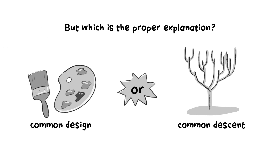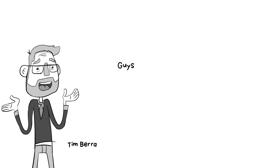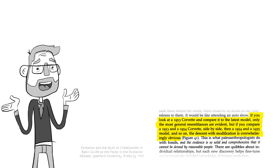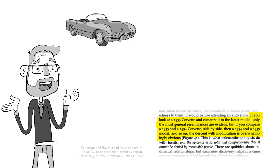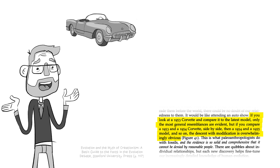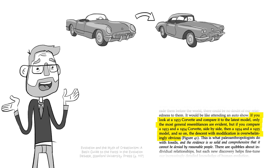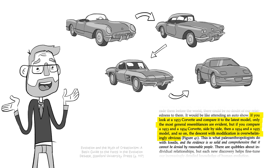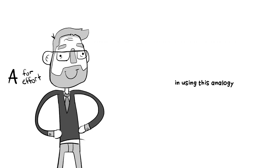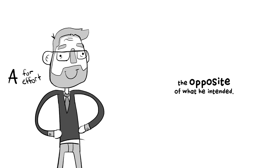But which is the proper explanation for these obvious similarities? Enter biologist Tim Berra. He had a really good illustration to put this question to bed: if you look at a 1953 Corvette and compare it to the latest model, only the most general resemblances are evident. But if you compare a '53 and '54 side by side, and so on, the descent with modification is overwhelmingly obvious. In using this analogy, Dr. Berra actually demonstrates precisely the opposite of what he intended.